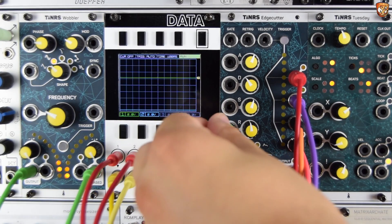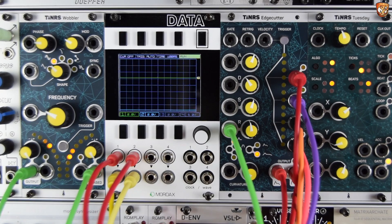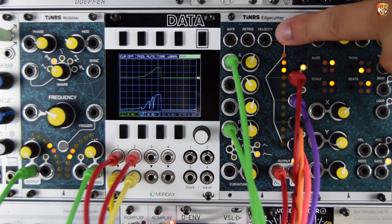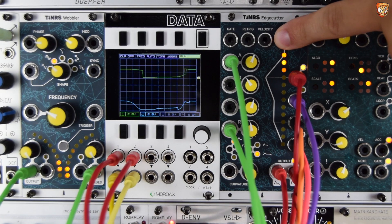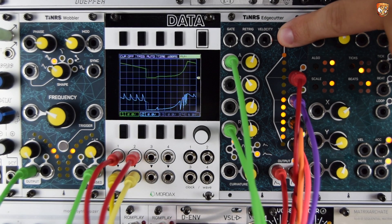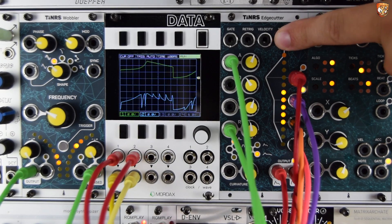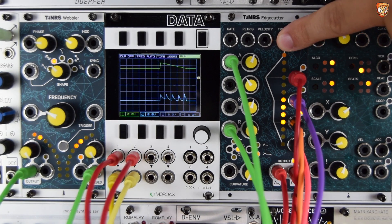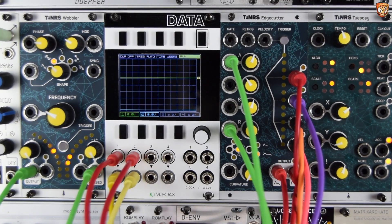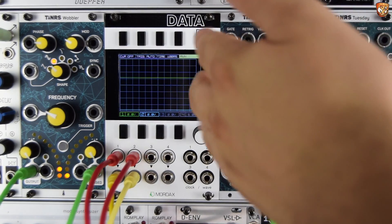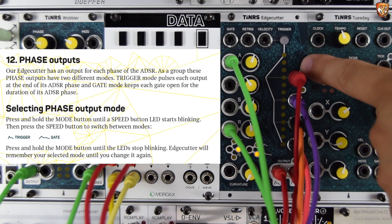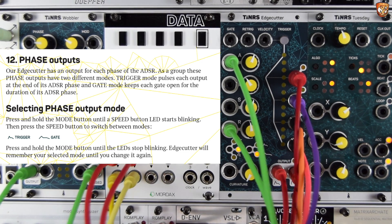Now let's add some modulation — say to attack and release time from Wobbler. I suggest you go watch the Wobbler video if you haven't, right after this one. You can hear we're getting through this cycle of sounds faster or slower depending on how these are being modulated. As the manual shows, we can change the mode of either triggers or gates for the individual phase outputs on attack, decay, sustain, and release, so you can set up the behaviour that best suits your patching.